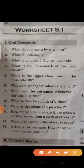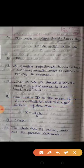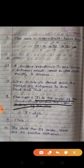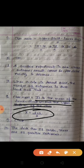Question number 8: what is the class mark of a class? Class mark is the mean of the lower limit and the upper limit of the class. So x equals l plus u upon 2, the mean of the lower limit and the upper limit.